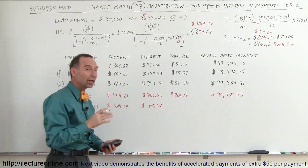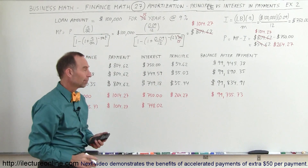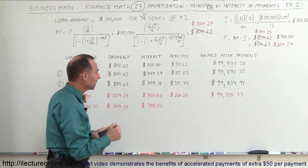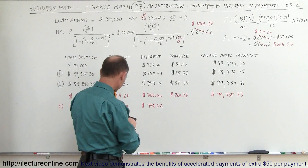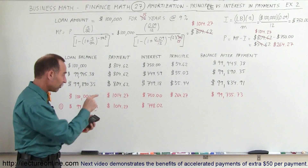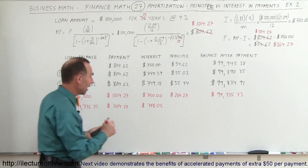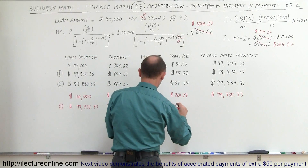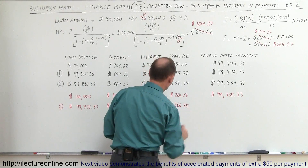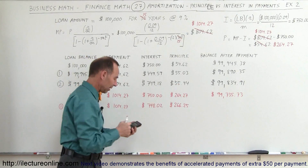That's a drop of two dollars after one payment, where on the 30-year loan there's only a drop of 41 cents — which means almost two dollars more will go to principal. So we take the payment of $1,014.27, subtract the $748.02, and now instead of $264 going to principal we have $266.25 going to principal.